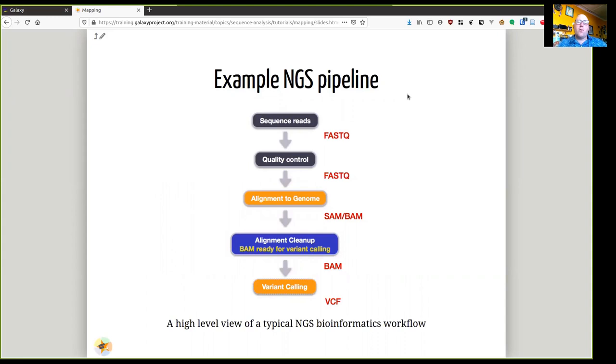So where does mapping fit into the next generation sequencing pipeline? After you have received your reads from the sequencer and you've done some quality control, you want to align to a genome. And we'll have a look at what that means in just a minute.